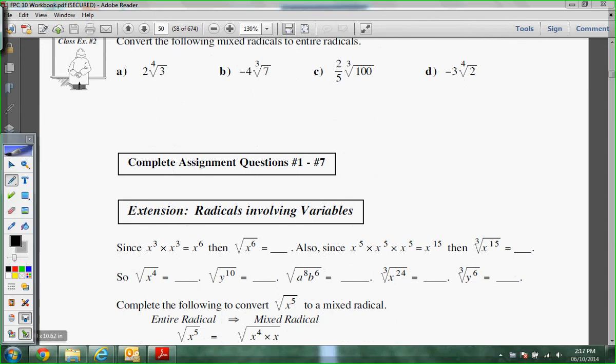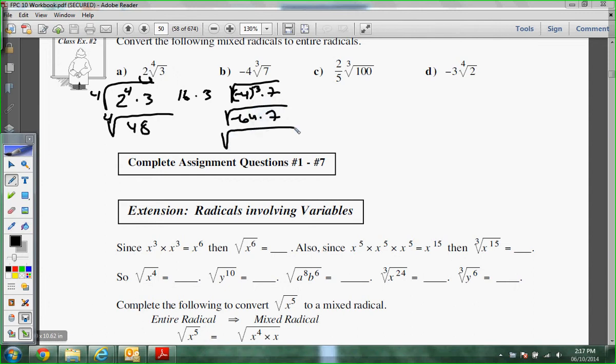Convert the following mixed radicals into entire radicals. Alex, so the 2, I push that in. What do I have to do to it? To the 4th. 2 to the 4th times 3 is what's going to be inside. 16. What's 16 times 3? 48. 4th root of 48. Chris, negative 4 cube root 7. So you have negative 4 cubed times 7, and that was negative 64 times 7. Negative 448.